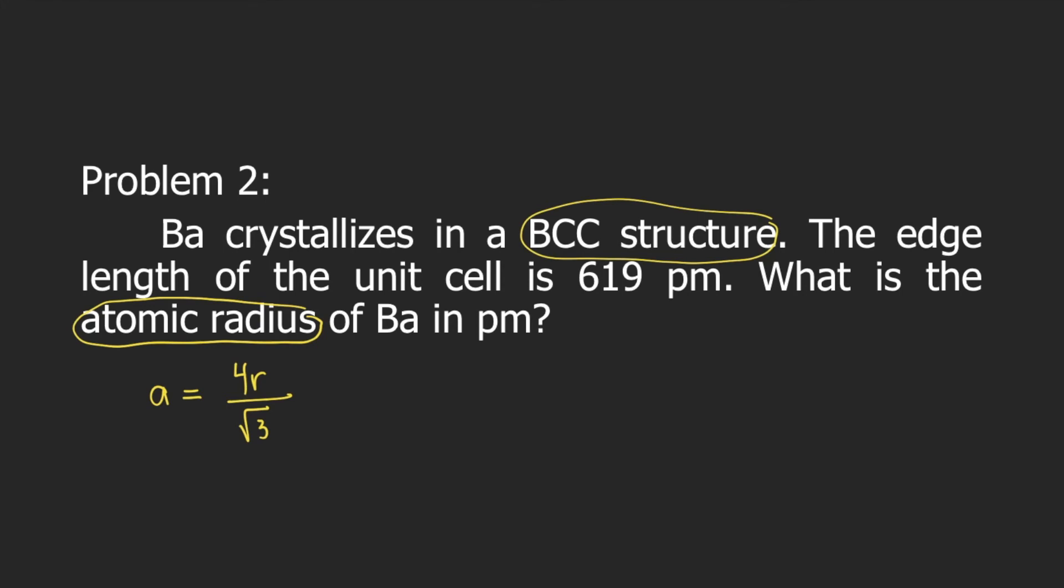So the first thing you need to do is multiply both sides of the equation by square root of 3. So square root of 3 will cancel on the right side. And your equation becomes square root of 3 times a is equal to 4r.